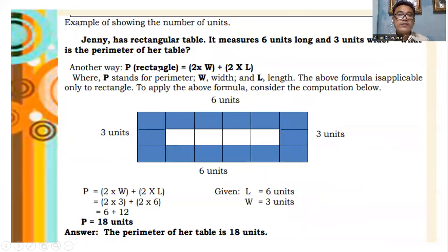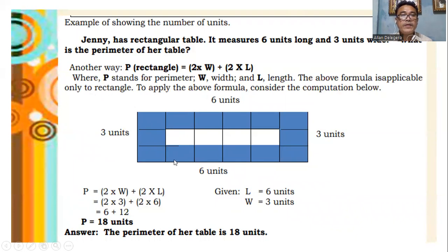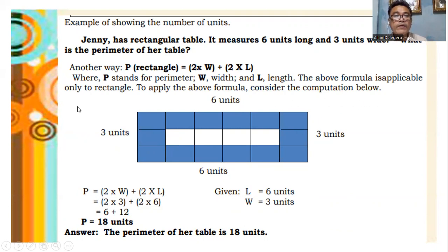Jenny has a rectangular table. It measures 6 units long and 3 units wide. What is the perimeter of her table? Another way: the perimeter of a rectangle equals 2 times width plus 2 times length, where P stands for perimeter, W stands for width, and L stands for length. This formula is applicable only to rectangles.